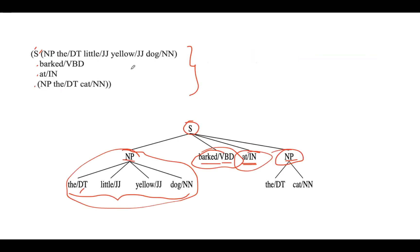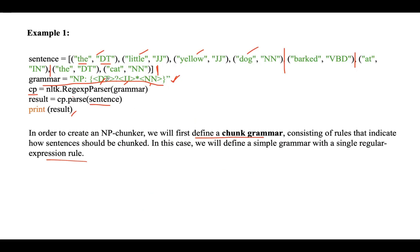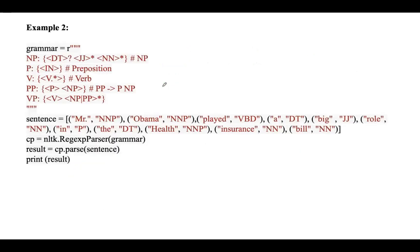You can write output this way or generate a parse tree. Now, what if the grammar has more than one rule? In that case we need to check all rules. In the second example, you can see this grammar has multiple rules: noun phrase, preposition, verb — followed by preposition — then a prepositional phrase gives preposition plus noun phrase. A verb phrase means a verb followed by any combination of noun phrase or prepositional phrase, with zero or one occurrence of that phrase.